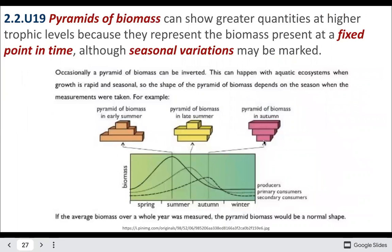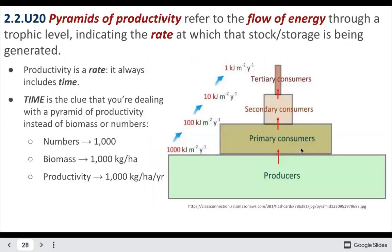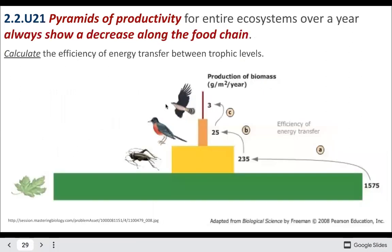In summer versus autumn, there are fewer producers but still many consumers. Productivity pyramids are most ideal because they account for seasonality by looking over an entire year. Productivity can be measured in kilojoules (energy) or kilocalories — calories are a measure of energy, which is why they appear on food labels. You can also measure productivity as biomass over time.